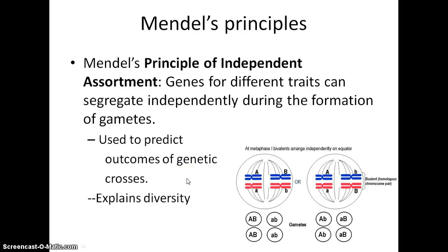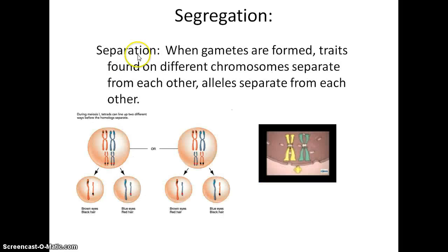Of course, Mendel had no idea about chromosomes or any of the genetics behind it — he just noticed traits and the idea that they were inherited independently. You also get to the idea of segregation or separation: when gametes are formed, traits found on different chromosomes are going to separate from each other, and which one you get is really random.